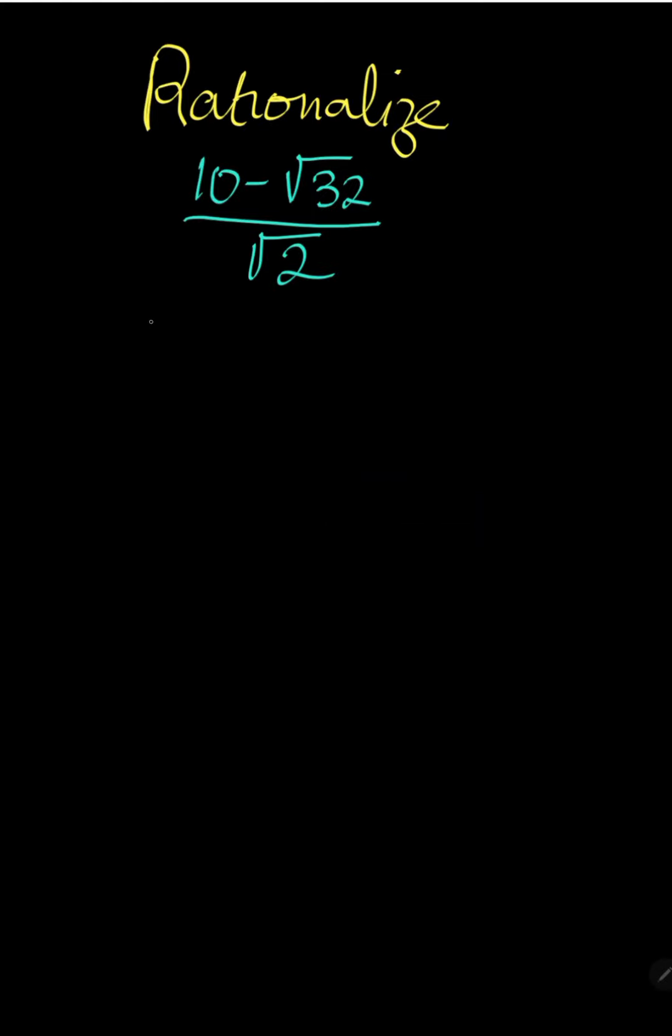So we are to rationalize 10 minus √32 over √2. Before that, let us simplify the numerator.